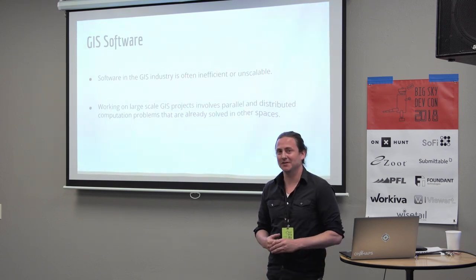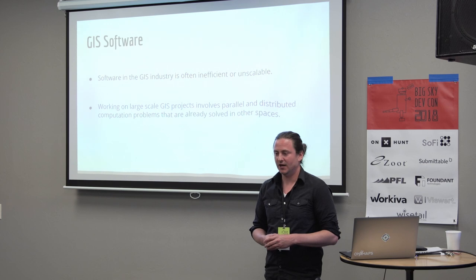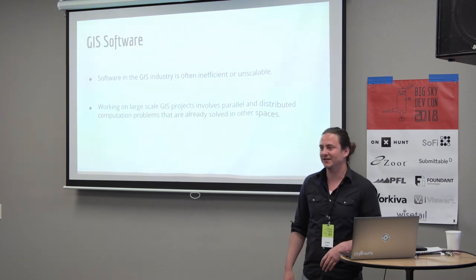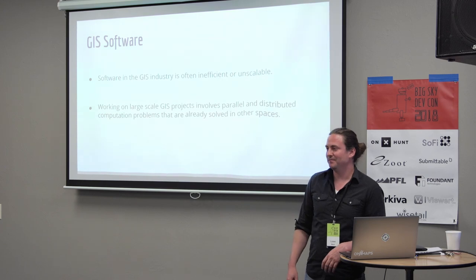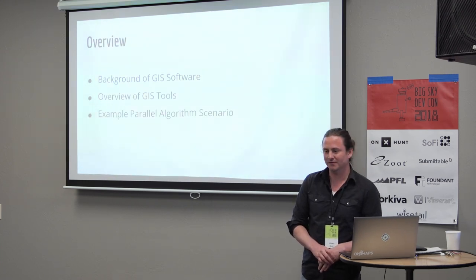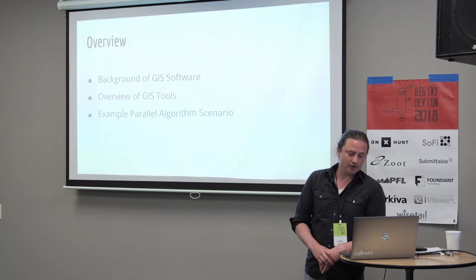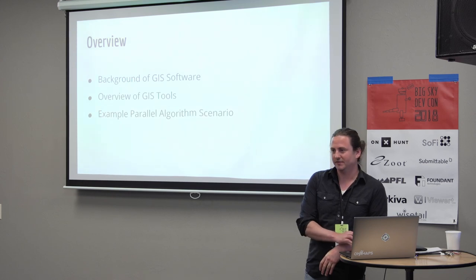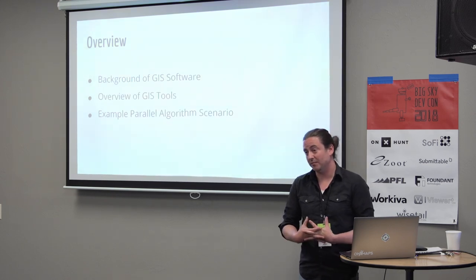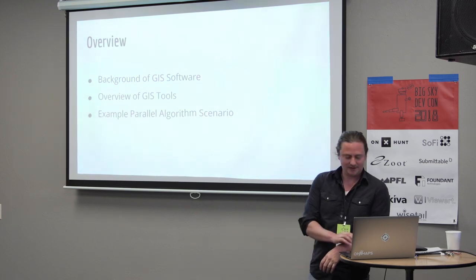It's interesting trying to figure out why the GIS industry feels like it's behind the rest of the software world. I don't really know the answer, but I've compiled a couple of examples of problems we've faced and some ideas of why the GIS world is where it's at. I'll give a background of GIS software, an overview of the tools, and then a couple of examples of parallel algorithm problems that feel more low-level than you'd expect in other industries.